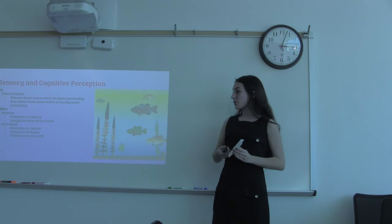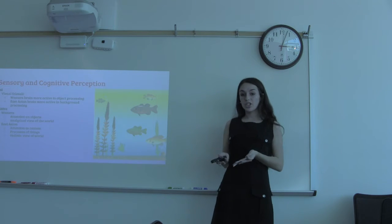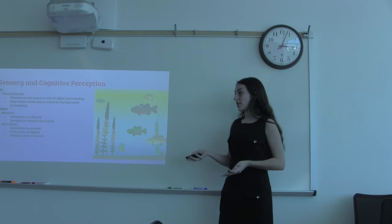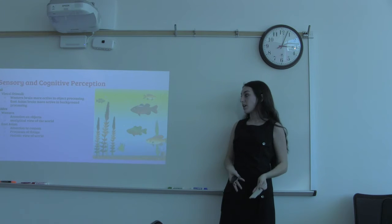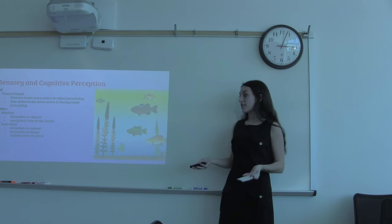Then we have sensory perception. In a study they had American children and Chinese children where they gave them an animated scene. From the study it resulted that Western cultures have a more active brain in object processing, while East Asian cultures have a more active brain in background processing.